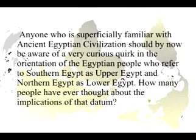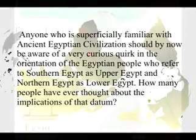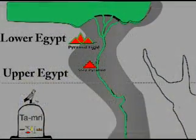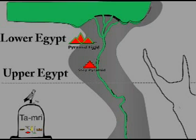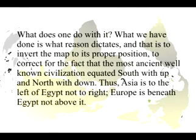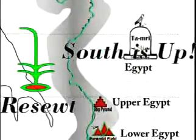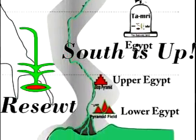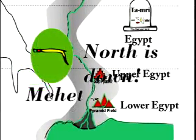Anyone superficially familiar with ancient Egyptian civilization should be aware of a curious quirk in the orientation of the Egyptian people, who refer to Southern Egypt as Upper Egypt and Northern Egypt as Lower Egypt. What we have done is what reason dictates — to invert the map to its proper position, correcting for the fact that the most ancient well-known civilization equated southward with up and northward with down.